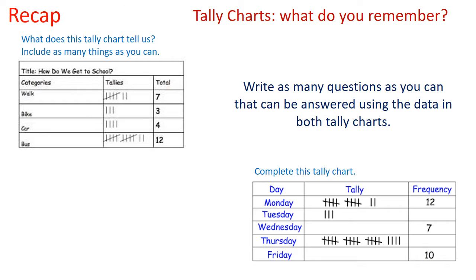So first of all, there's a bit of a recap for you to do. How many questions can you write about these two sets of data? For example, you could have: how many more children walk to school than go on their bike?